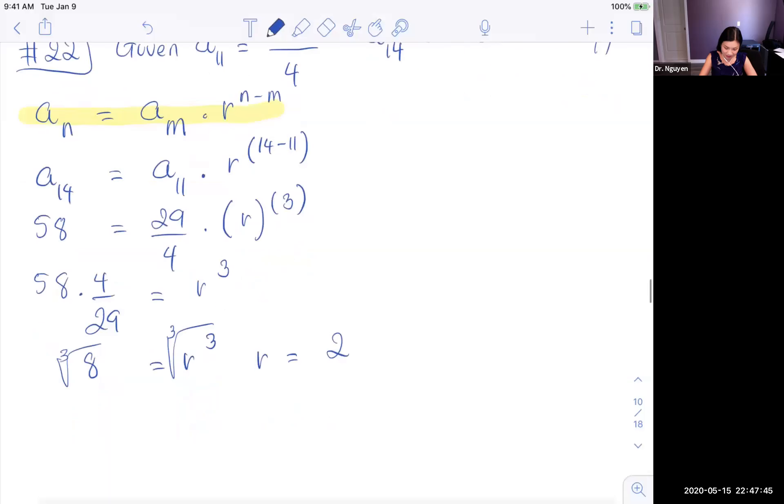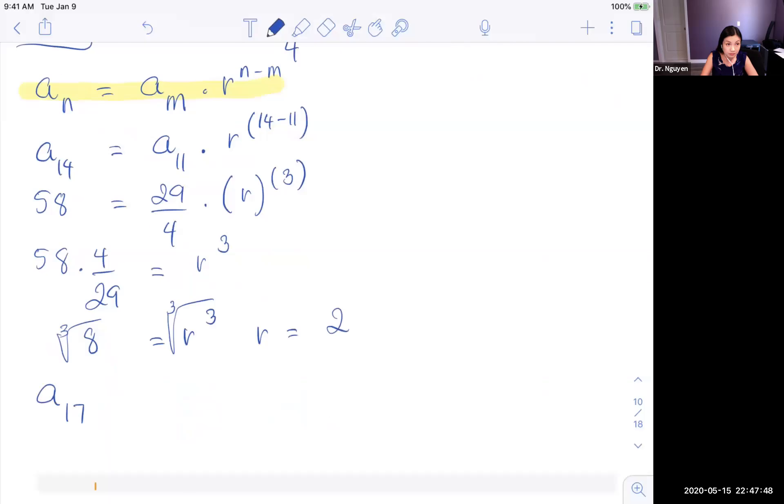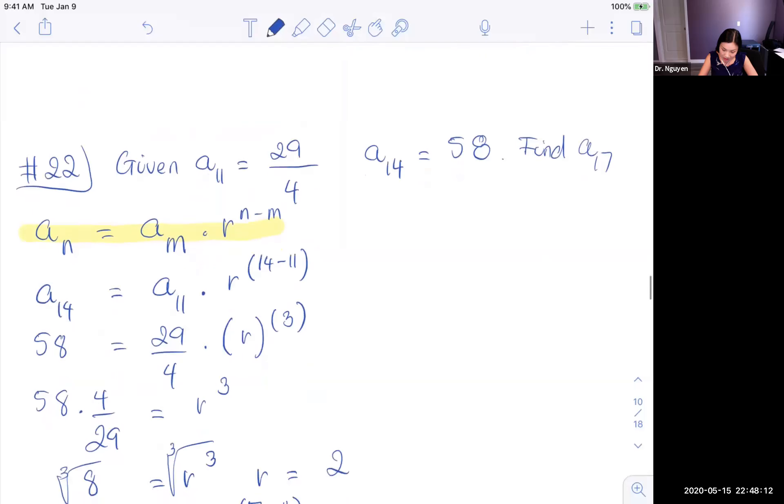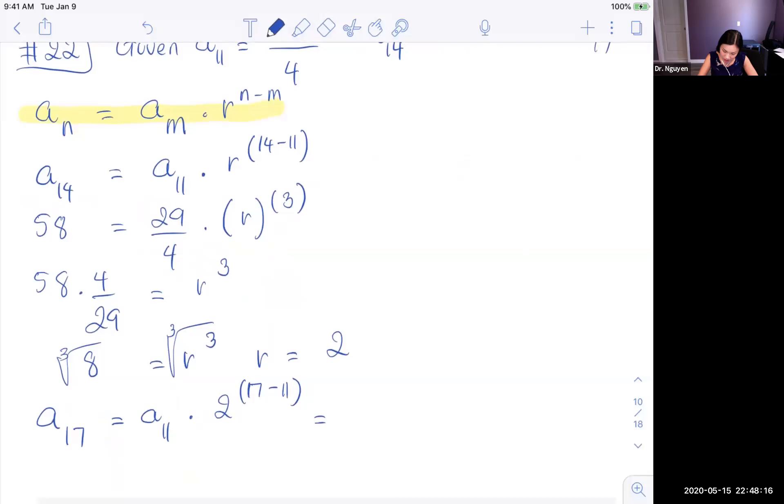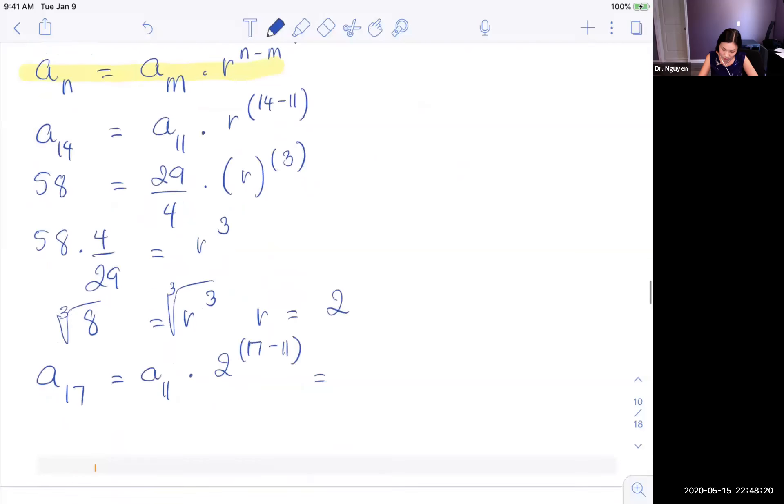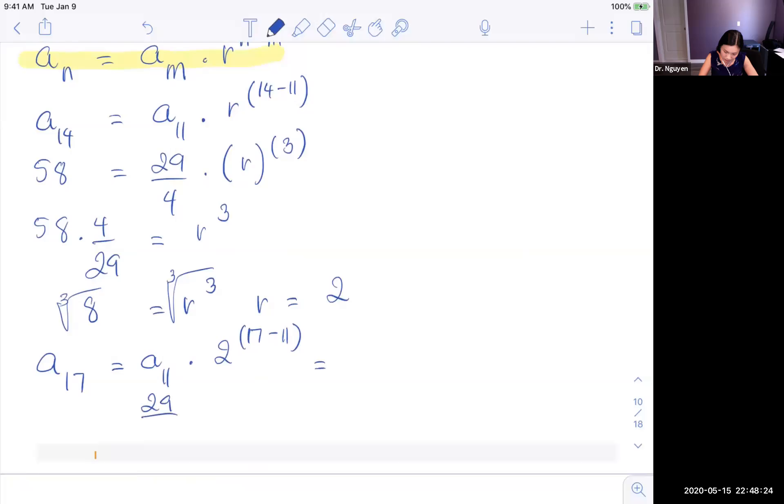Now I can go back and find A17. So A17 is going to be A11 times 2 to the 17 minus 11. A11 is 29 over 4 times 2 to the 6th power. So if you calculate that, 2 to the 6th power is 64. We simplify with 4, you're going to end up with 464.